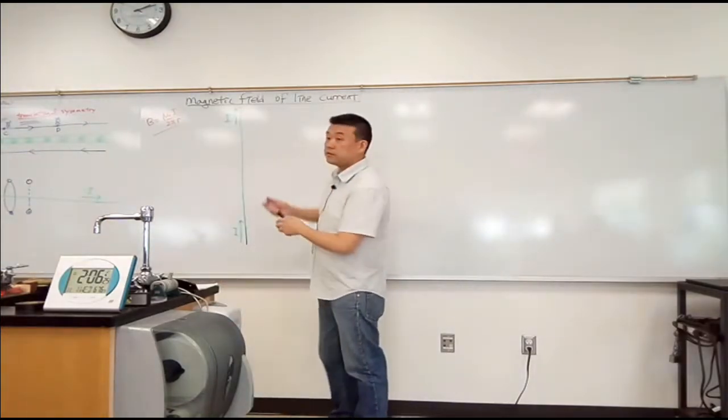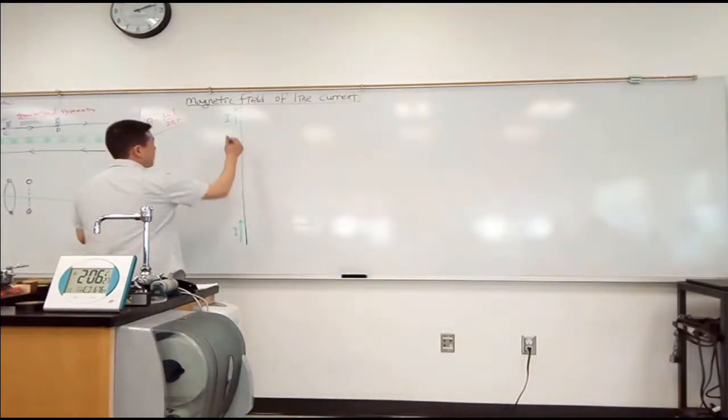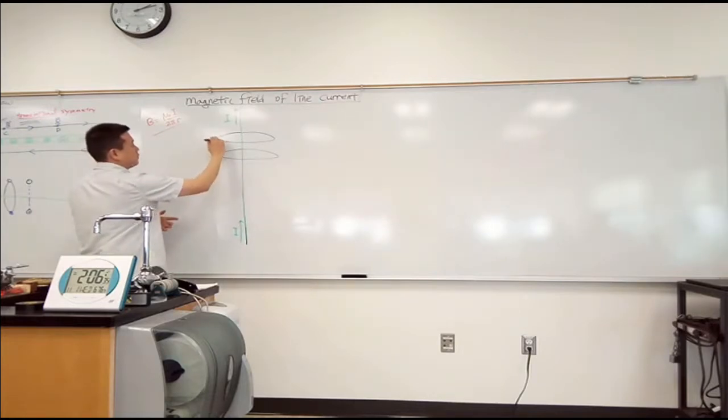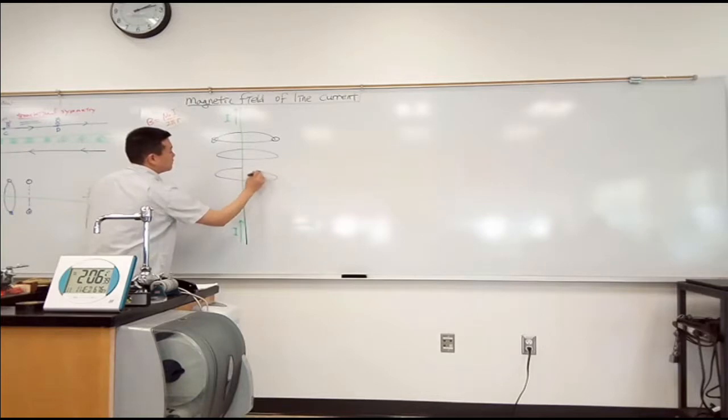So when we have this line current, I know that my magnetic field lines in a perspective view looks kind of like this. So it'll be coming out of the board here, into the board here. I know this is how my magnetic field lines look like. Good?